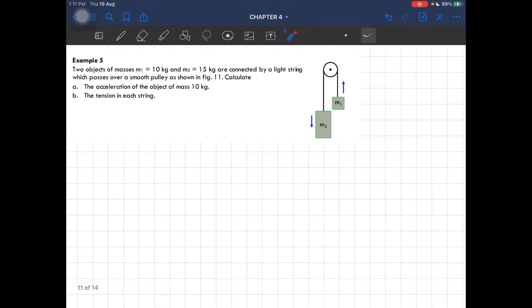Example number five: Two objects of masses 10 kg and 15 kg are connected by a light string which passes over a smooth pulley, so there's no friction. Calculate the acceleration of the object of mass 10 kg, which is m1, and then the tension in each string. This one is a trick - in each string means you have to consider this one and this one, but the tension should be the same.